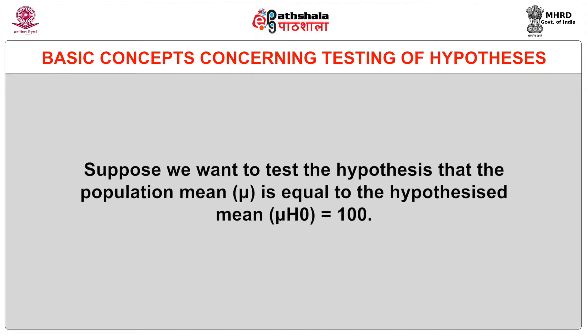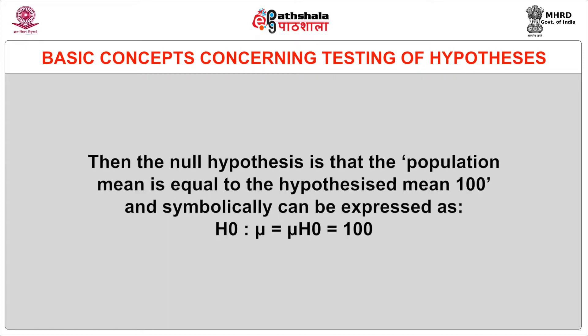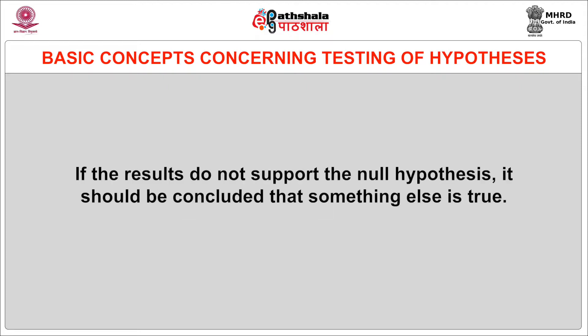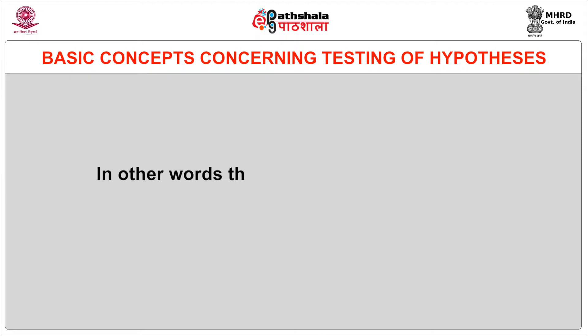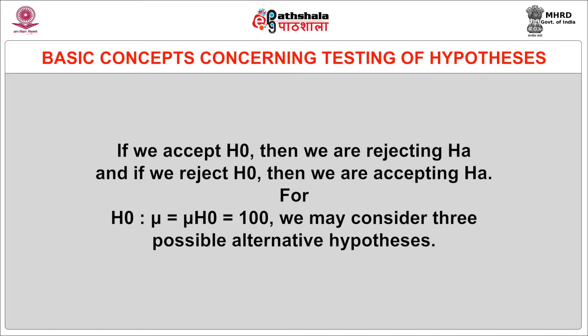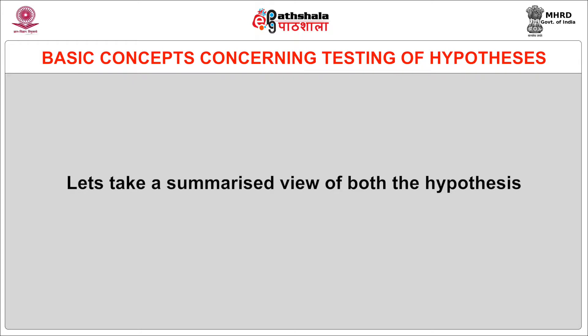Suppose we want to test the hypothesis that the population mean (mu) is equal to the hypothesized mean (mu H₀) equal to 100. Then the null hypothesis is: H₀: mu = mu H₀ = 100. If the results do not support the null hypothesis, it should be concluded that something else is true — in other words, the null hypothesis is rejected. If we accept the null hypothesis, then we are rejecting the alternate hypothesis, and if we reject the null hypothesis, then we are accepting the alternate hypothesis.